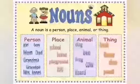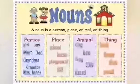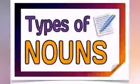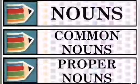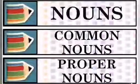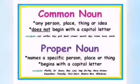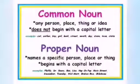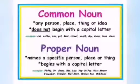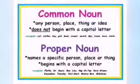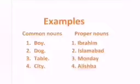Let's have a look on some other examples of noun. Common noun is a name of any person, place, thing or idea and it does not begin with a capital letter. Proper noun names a specific person, place or a thing and it always begins with a capital letter.